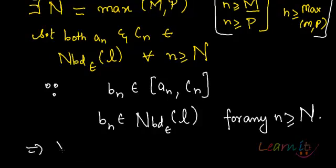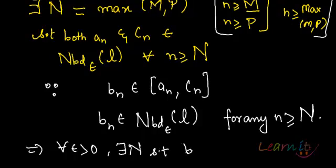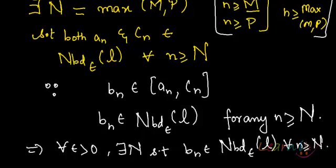Therefore, since epsilon was arbitrary, we have found a natural number N such that b_n belongs to the neighborhood of L for all n greater than or equal to capital N. So that's the squeeze theorem and the proof of it, and this theorem can be used in a lot of applications.